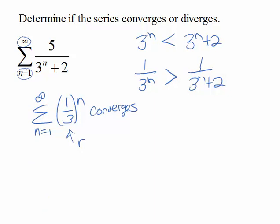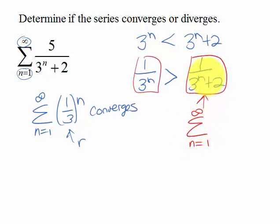Now if this series converges and these terms are always greater than these terms in the series, then we know that this series would also converge—the series that was made from having these terms.